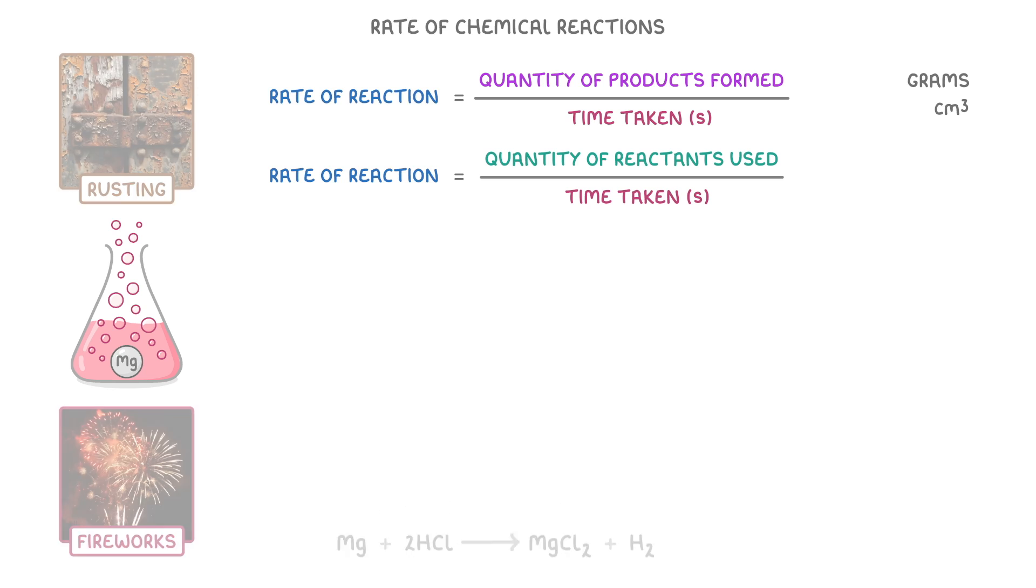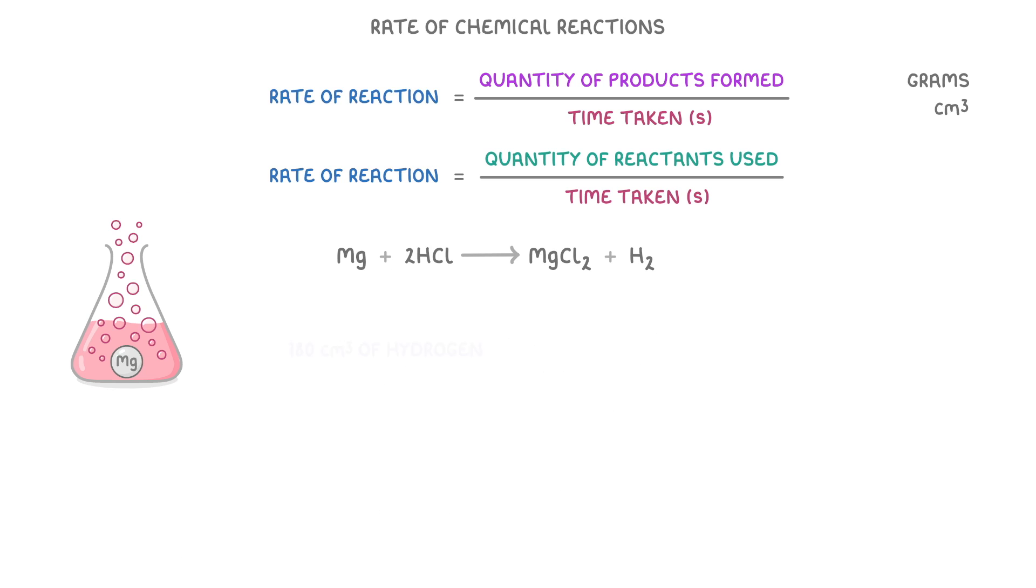For example, if we knew that our magnesium and acid reaction produced 180 centimeters cubed of hydrogen in two minutes, then because hydrogen is a product, we would use our product form equation, and do 180 centimeters cubed divided by 120 seconds, because remember we have to convert our two minutes into seconds, which would give us a rate of 1.5 centimeters cubed per second.